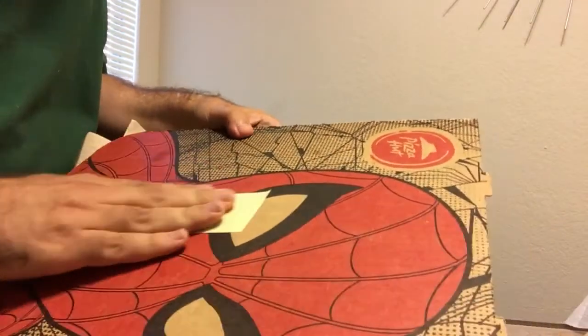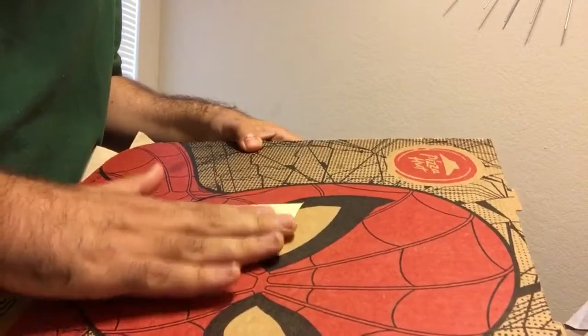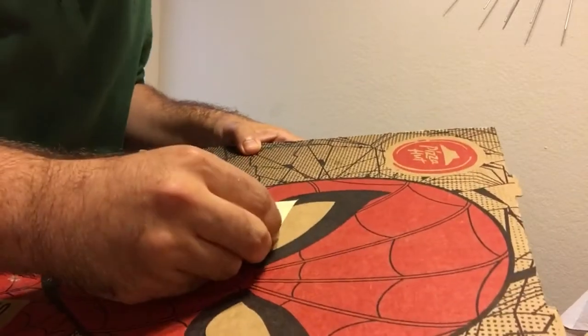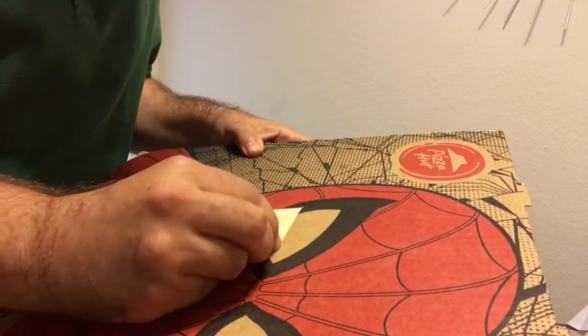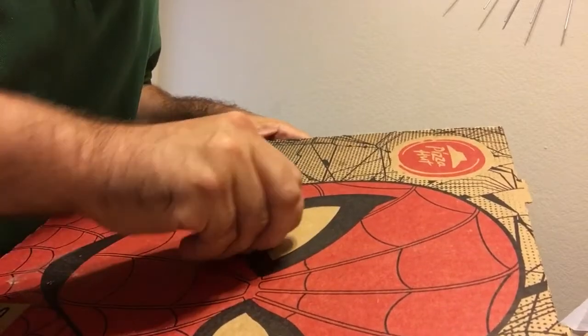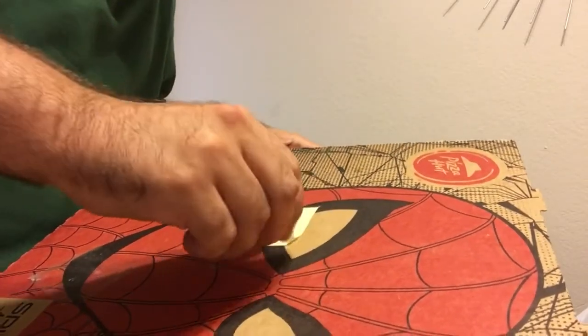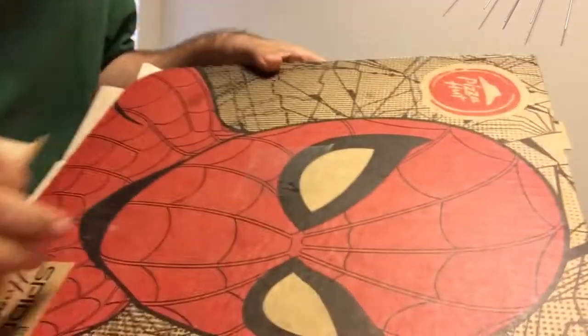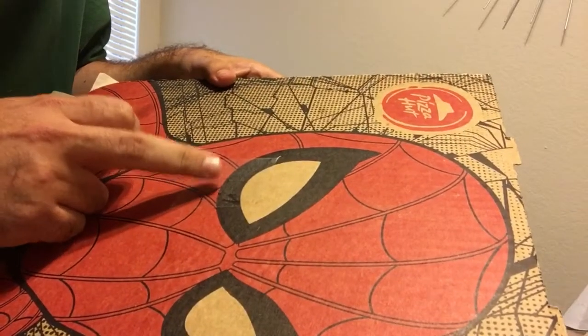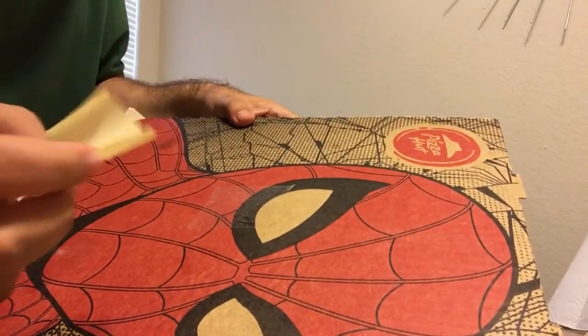If you put it on top of cardboard, for example like this, or whatever surface you're going to use, you can peel the paper much more easily like this. Here is the sticky part and this is the paper.